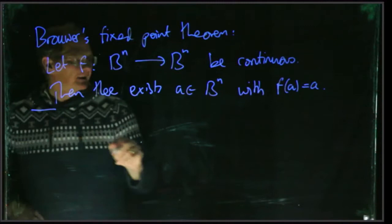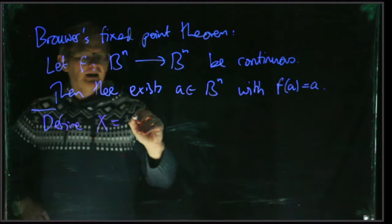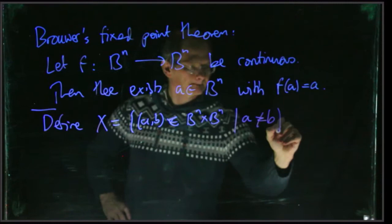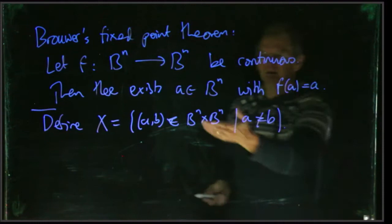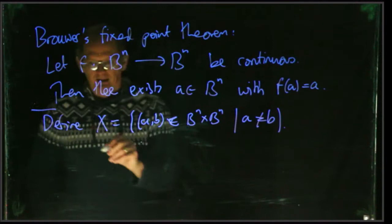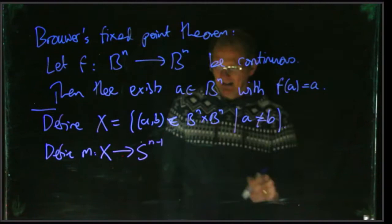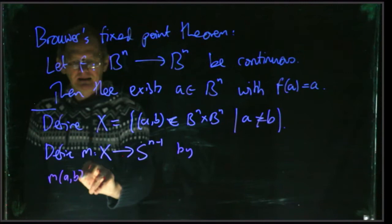So here we have to define a certain map. Firstly we need to put X as the set of pairs (a,b) in B^n × B^n with a different from b. So this is B^n × B^n, we give the product topology, and this space we give the subspace topology, so that's an open subspace of B^n × B^n. And we're going to define m from X to S^(n-1), the boundary of B^n by m(a,b).